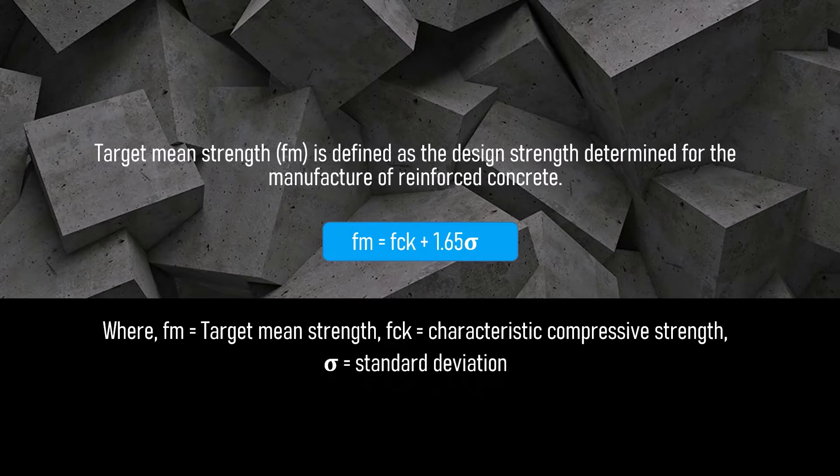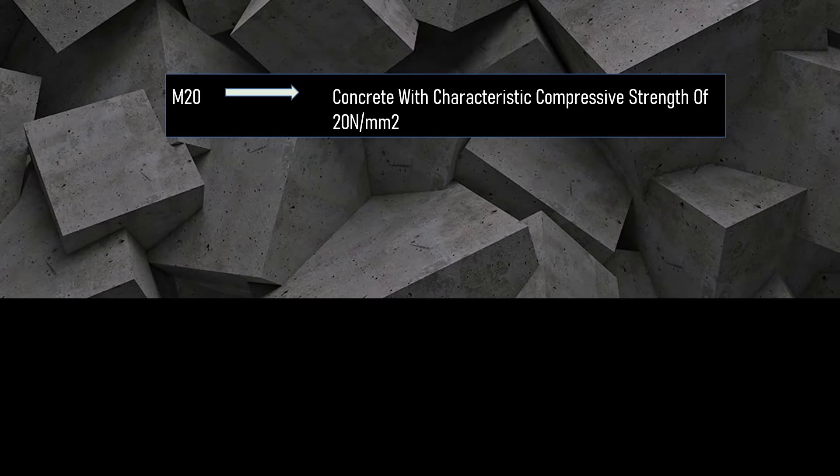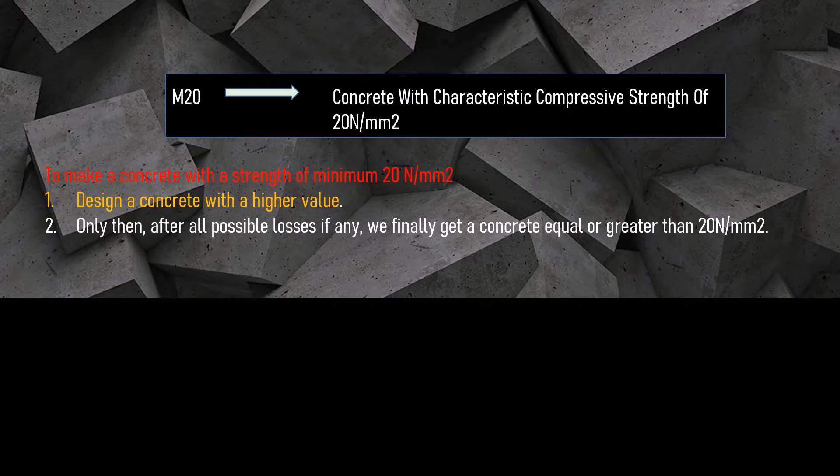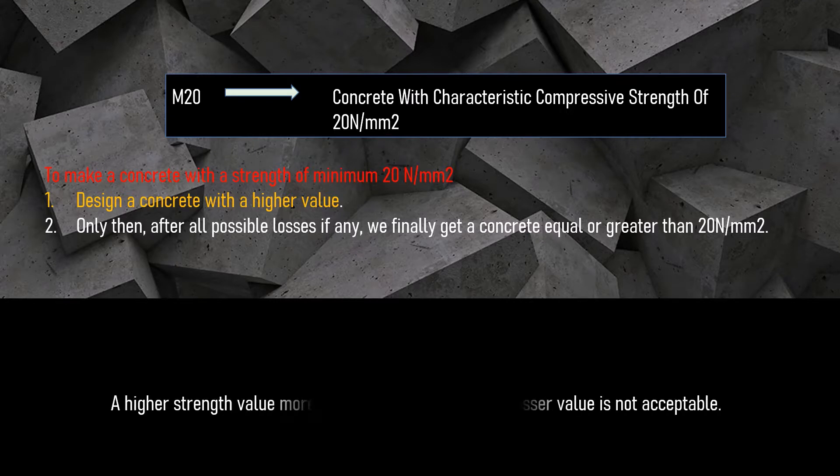In simple words, an M20 concrete implies a concrete with characteristic compressive strength of 20 N per mm2. But in real practice, in order to make a concrete with a strength of minimum 20 N per mm2, we need to design a concrete with a higher value. Only then, after all possible losses if any, we finally get a concrete equal or greater than 20 N per mm2. A higher strength value more than intended is fine, but a lesser value is not acceptable.